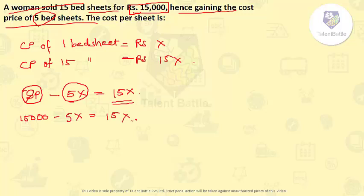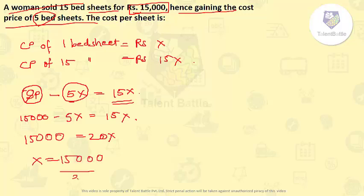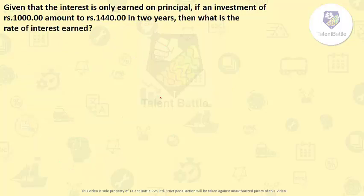So 15,000 equals 20X, and X will be 15,000 upon 20, that is 750 rupees. We considered the cost price of 1 bedsheet as X and we are getting X as 750, so the answer will be 750 rupees.